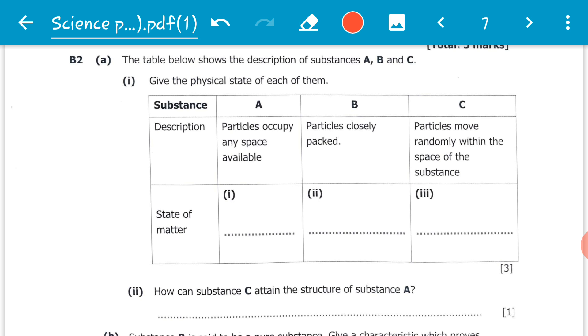The table below shows the description of substances A, B and C. Question B2a reads: give the physical state of each of them. So they want the physical state of A, the physical state of B, and the physical state of C. The description of the substance is particles occupy any space available.